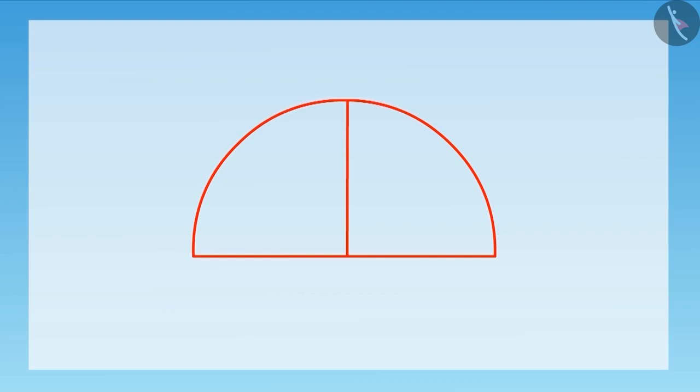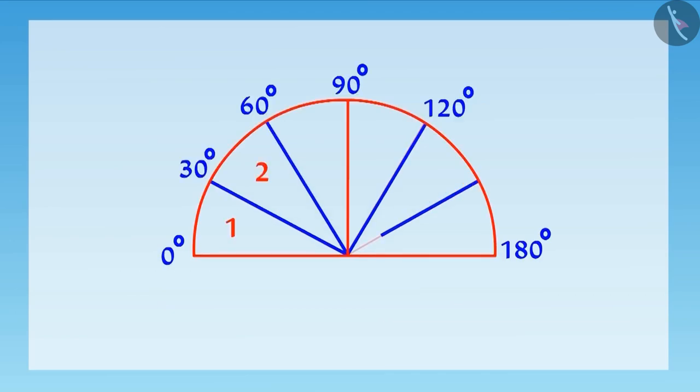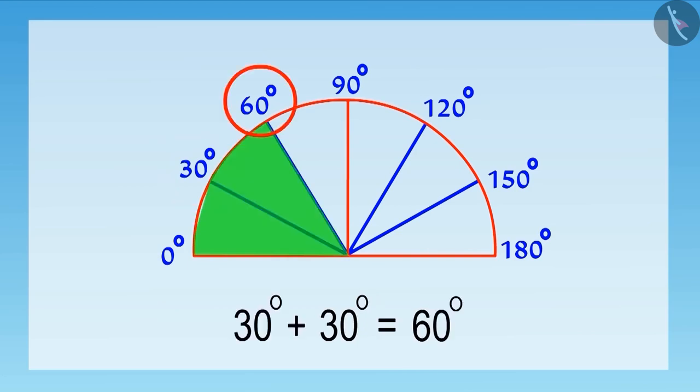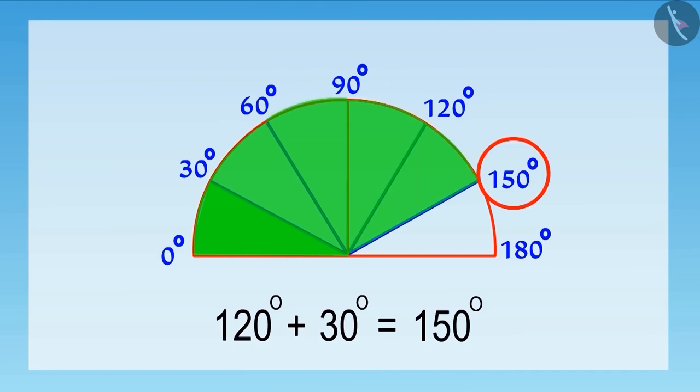Now, divide both the halves of the semicircle into three equal parts. So, there will be a total of six parts of the semicircle. Here, we divide 90 degrees into three equal parts and hence, the measurement of each part will be 30 degrees. And if we count from zero, then this first angle will be 30 degrees, second 60 degrees. Similarly, on adding 30 degrees to each of these angles, the last angle will be 180 degrees.